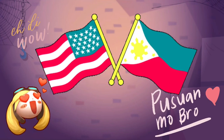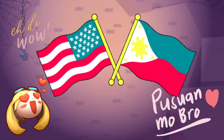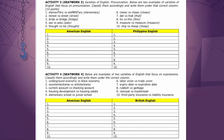Now, for Activity Number 3, below are two examples of varieties of English that focus on pronunciation. You need to classify them whether it is American English or Philippine English and write them under the correct column. The pairs are: 1) elementary vs. elementary; 2) street vs. street; 3) bridge vs. bridge; 4) ask vs. asks; 5) thought vs. thought; 6) closes vs. closes; 7) that vs. that; 8) tin vs. thin; 9) measure vs. measure; and 10) chip vs. chip.